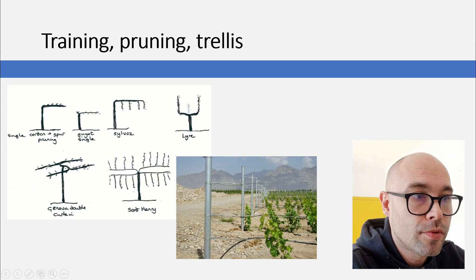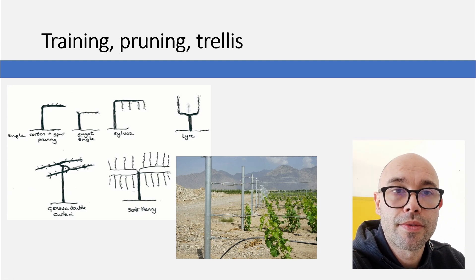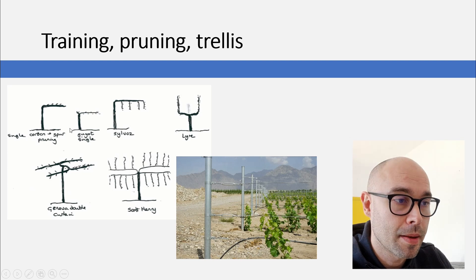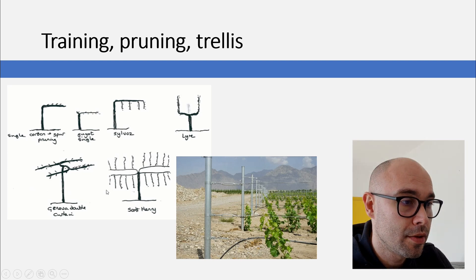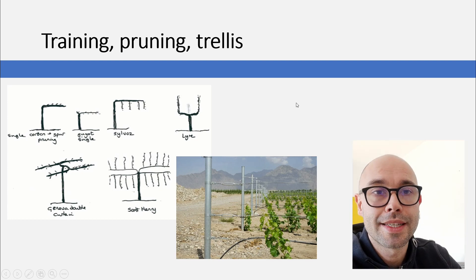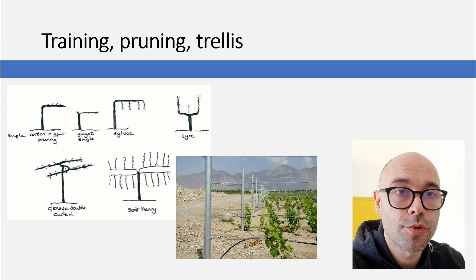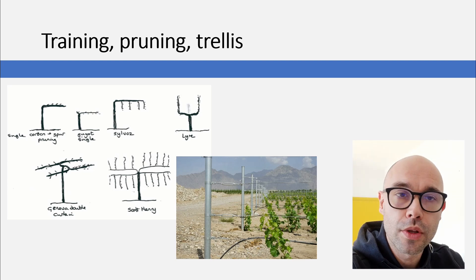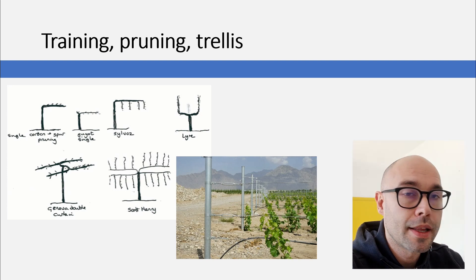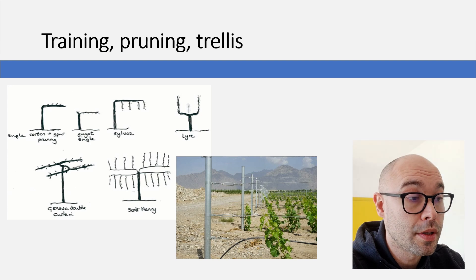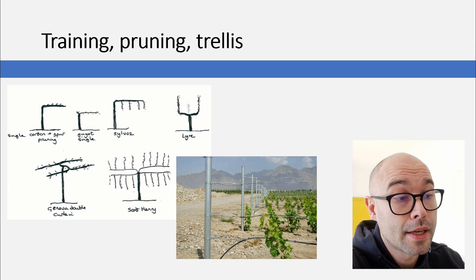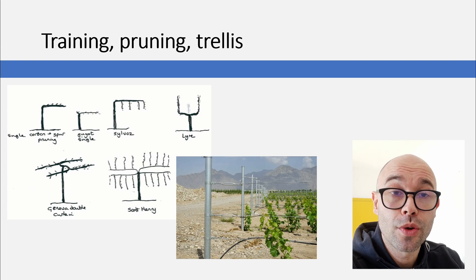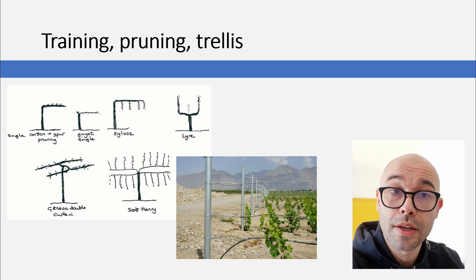Training, pruning and trellising. Training is the shape of the vine in the vineyard, and in this picture you can actually see the names and how some of the training systems look like — cordon spur, single guyot, sylvos, lyre, Scott Henry. These are some examples of training systems. At level 2 you don't need to understand how all of this works; you need to be aware of it, and later on if you're still interested you can go deeper into this subject. What you need to understand at this point is that different training systems are used in different vineyards, depending on the needs of the vine in that particular vineyard.